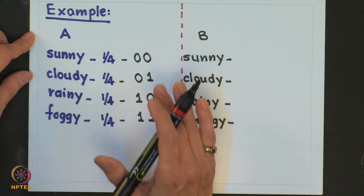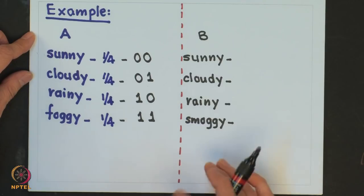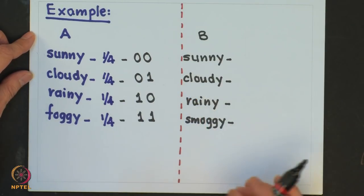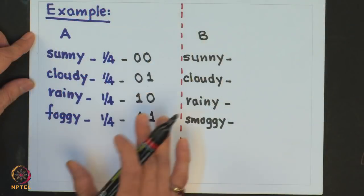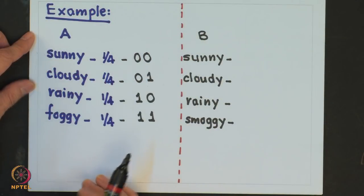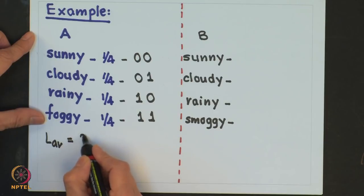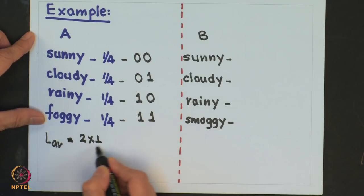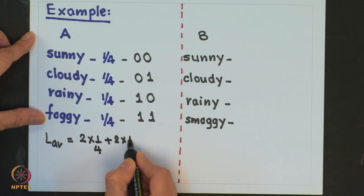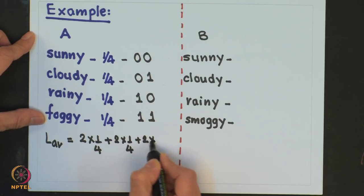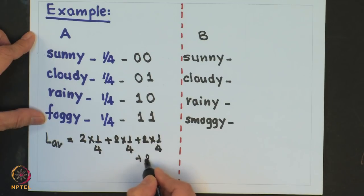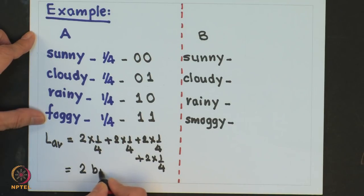For cost-effective communication it is desirable to have the binets per message as low as possible. The average length of these labels or code words is given as: L_average equals 2 multiplied by one-fourth, plus 2 multiplied by one-fourth, plus 2 multiplied by one-fourth, plus 2 multiplied by one-fourth. This gives us 2 binets per message.